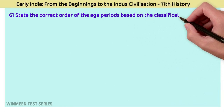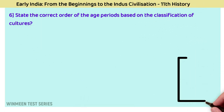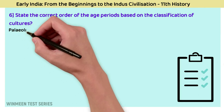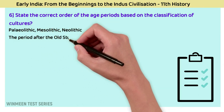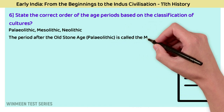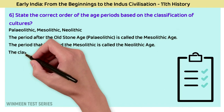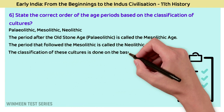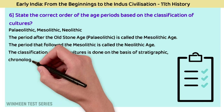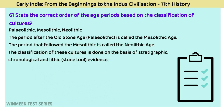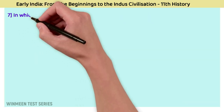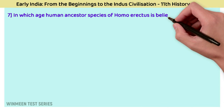Question 6: What is the correct order of age periods based on the classification of cultures? The answer is Paleolithic, Mesolithic, and Neolithic. The period after the Old Stone Age (Paleolithic) is called the Mesolithic Age, and the period following that is the Neolithic Age. The classification of these cultures is done on the basis of stratigraphic, chronological, and lithic (stone tool) evidence.